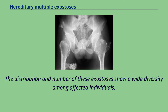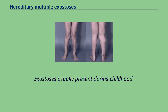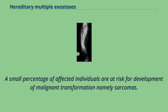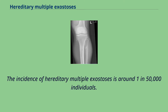The distribution and number of these exostoses show a wide diversity among affected individuals. Exostoses usually present during childhood, and the vast majority of affected individuals become clinically manifest by the time they reach adolescence. A small percentage of affected individuals are at risk for malignant transformation, namely sarcomas. The incidence of hereditary multiple exostoses is around 1 in 50,000 individuals.